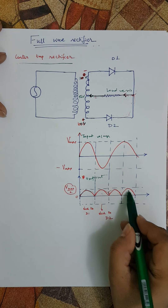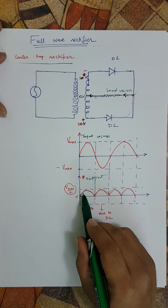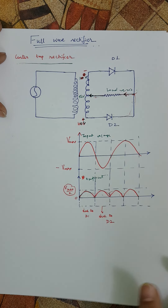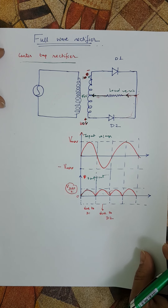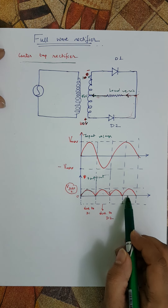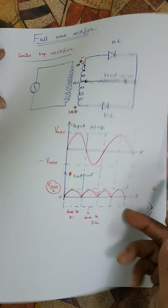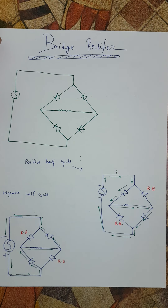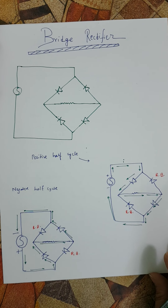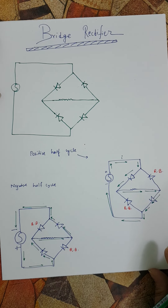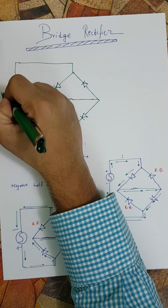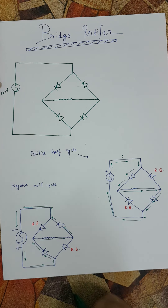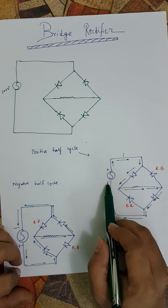When we want a uniform current we should remove the ripples and instead have a constant value of current. For that we use something called a filter — a filter removes all ripple effects and gives a smooth, continuous single value of current. Before going into the filtering part, there is another kind of rectifier called a bridge rectifier, which doesn't compromise on the full 100 volts.